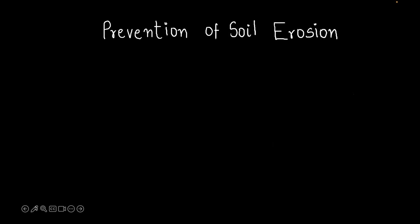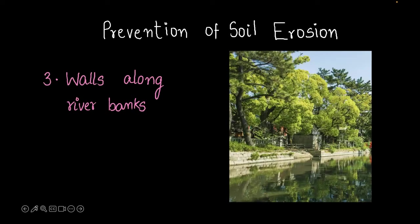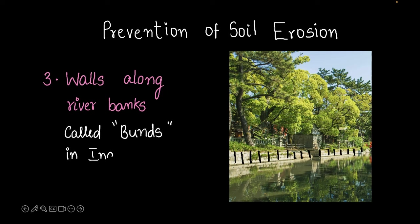Next, let's talk about how we can prevent rivers from causing soil erosion. We can build walls along river banks and that can cause prevention in soil erosion. Let's look at this picture. Can you see that wall there? That wall prevents the river from eroding away the soil that's there. In India it's often called bunds.